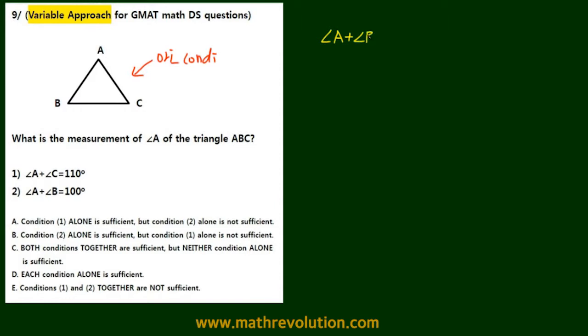What we have is angle A plus angle B plus angle C is equal to 180 degrees. There are three variables, the three angles.